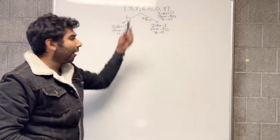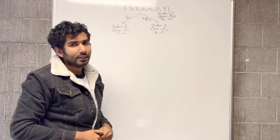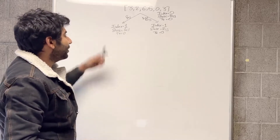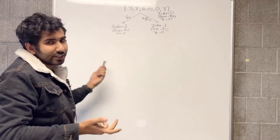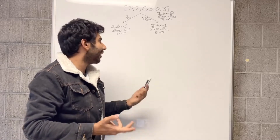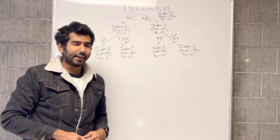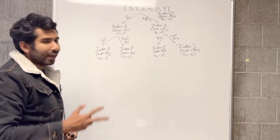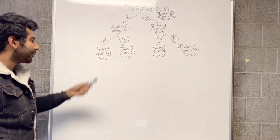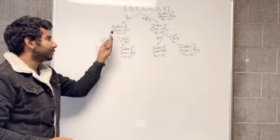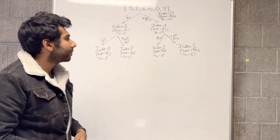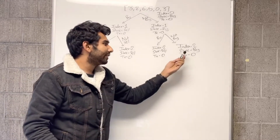In the very beginning we have two choices: whether to buy or not buy. If we buy, we move to index 1, the state becomes sell, and the transaction value is still 0. If we don't buy, the state stays buy and the transaction value is still 0. At the second level, if the state was sell, we either sell — changing state to buy and incrementing transactions to 1 — or don't sell, keeping state as sell and transactions at 0.